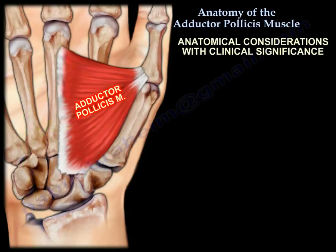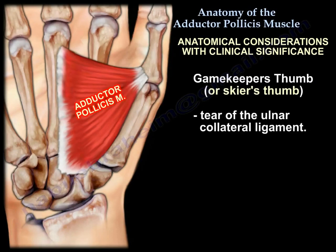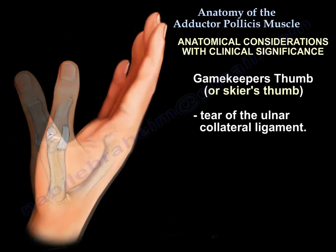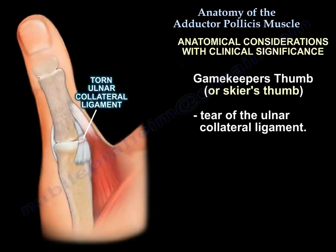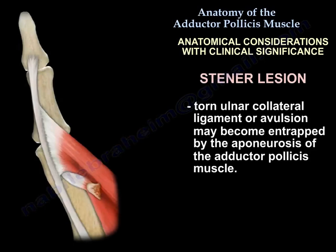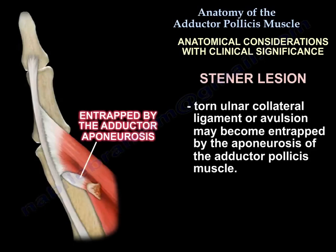First clinical consideration: Gamekeeper's thumb — tears of the ulnar collateral ligament of the thumb. In these cases there is a lesion called a Stener lesion. The adductor pollicis aponeurosis interposes between the torn ulnar collateral ligament and the proximal phalanx of the thumb, preventing healing of that ligament. This is the Stener lesion — the bad lesion that requires surgery to prevent chronic instability, swelling, pain, and chronic disability.